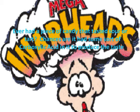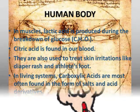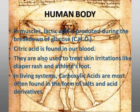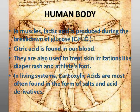Ever had a piece of candy that tasted sour or tart? Chances are it had some sort of carboxylic acid in it to produce that taste. In the human body, lactic acid is produced during the breakdown of glucose, which is C6H12O6, otherwise known as sugar. Citric acid is found in our blood. Carboxylic acids are also used to treat skin irritations like diaper rash and acne.